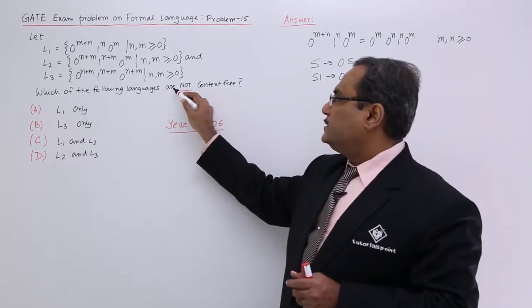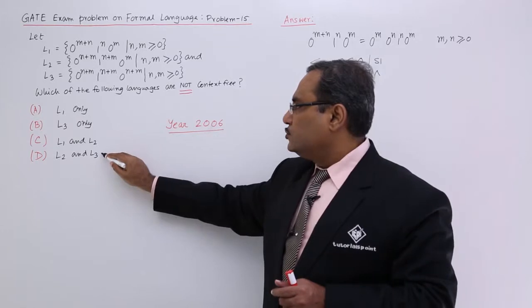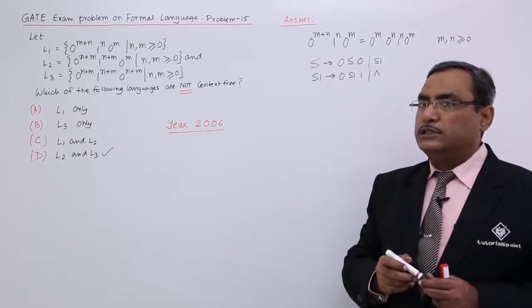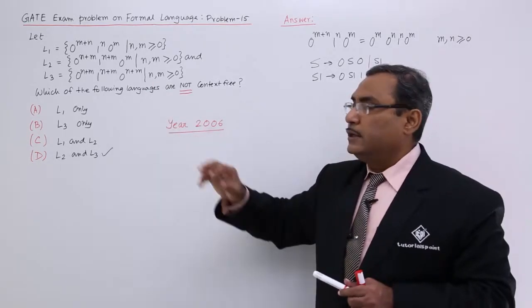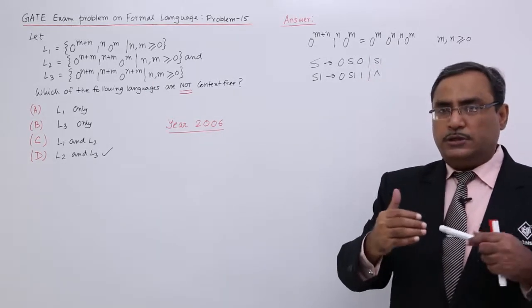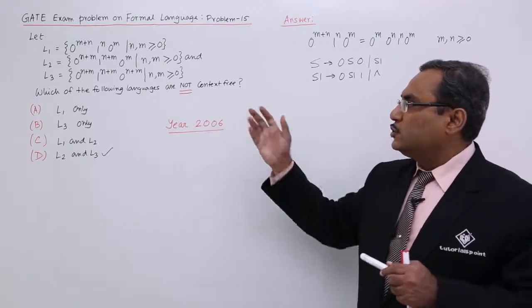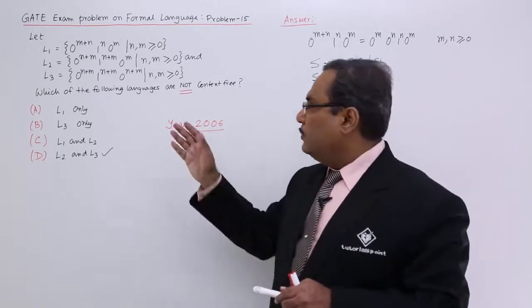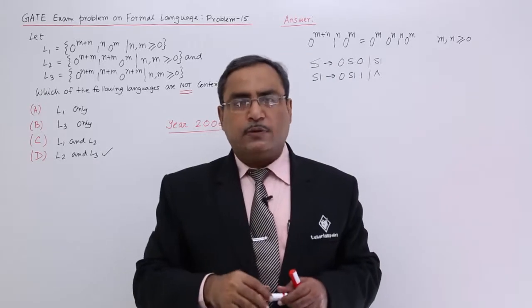That is why as it is telling that not context free, I should go for L2, L3. So that means this is the answer because L2, L3 they are not context free grammar. So in this way using estimation, just using your experience and all, you can easily solve such problems and these problems are very much time saving and I think you are getting this logic how we have solved this particular problem. Thanks for watching this video.